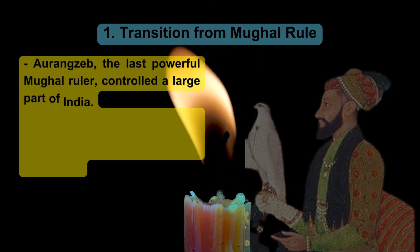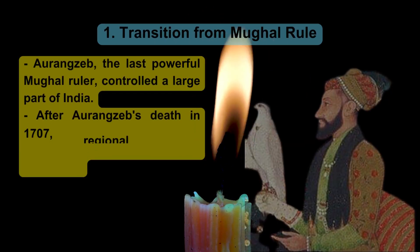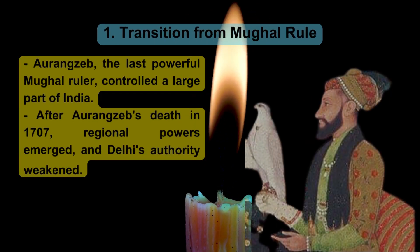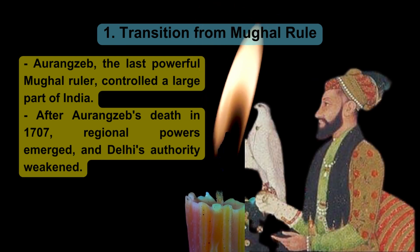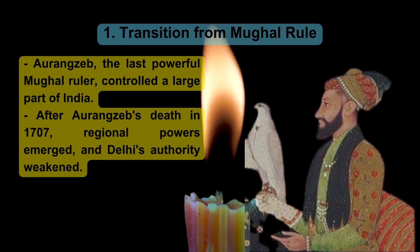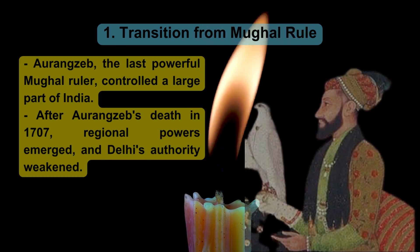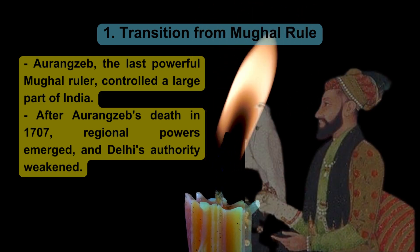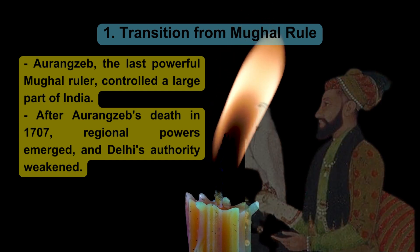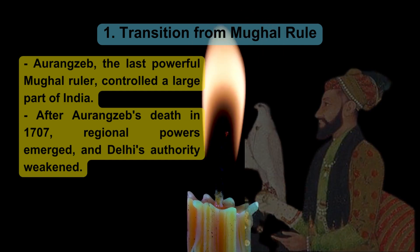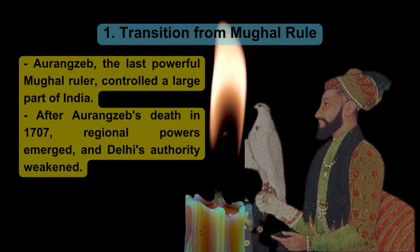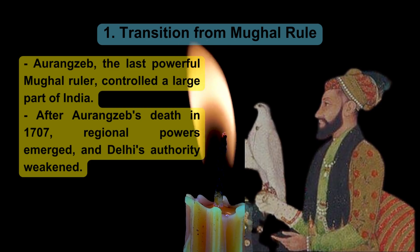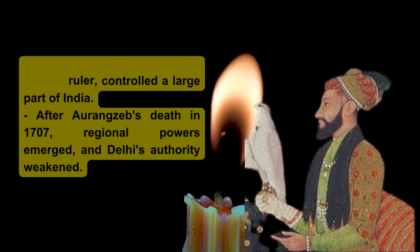Transition from Mughal Rule. Aurangzeb, the last powerful Mughal ruler, controlled a large part of India. After Aurangzeb's death in 1707, regional powers emerged and Delhi's authority weakened.